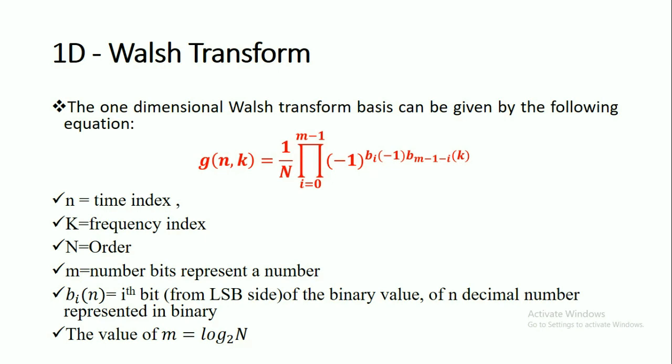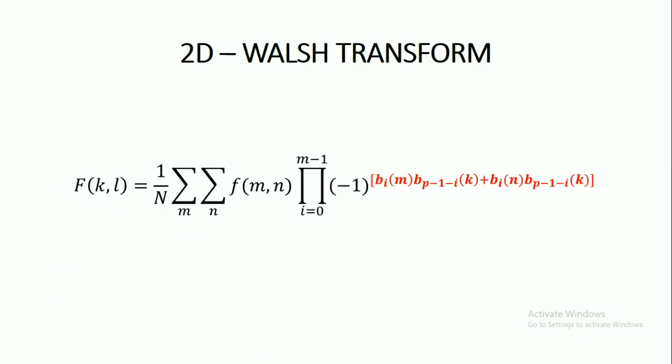In this formula, n represents the time index, k represents the frequency index, N represents the order, and m represents the number of bits representing the number. b_i(n) represents the i-th bit of the binary value of n, considering from the LSB side of the decimal number represented in binary. The value of m is given as m = log₂(N).